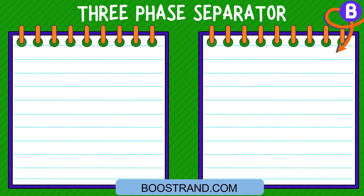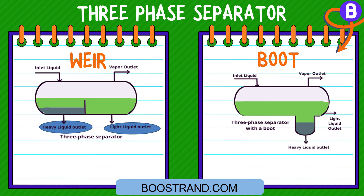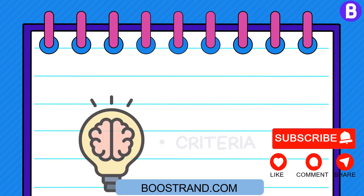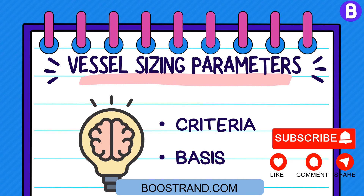In order to achieve both gas-liquid and liquid-liquid separation in one vessel, we would need a vapor space, a compartment for the heavy liquid, and a compartment for the light liquid. The compartment can be a weir or a boot. From a separation and level control point of view, the weir is much more efficient. However, it won't be feasible when the heavy liquid flow rate is too low compared to the light liquid, especially if there are no stringent separation requirements with respect to maximum droplet size. In this case, a small boot for the collection of heavy liquid can be considered. We need to determine some criteria and the basis on which we shall proceed in the vessel sizing procedure.